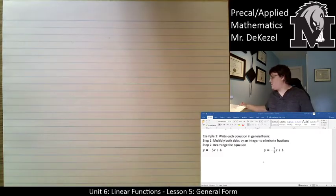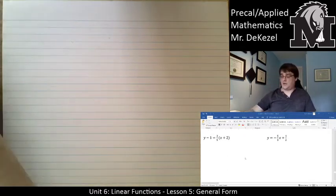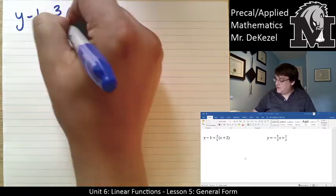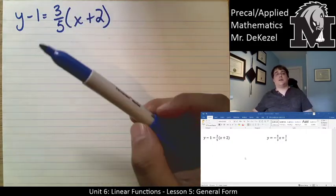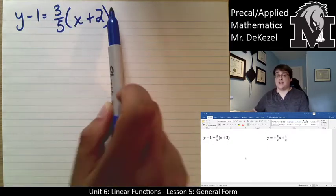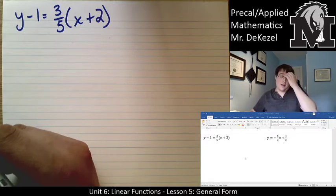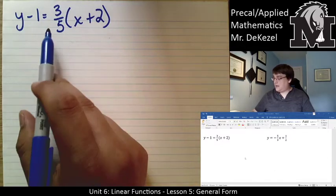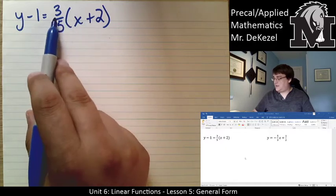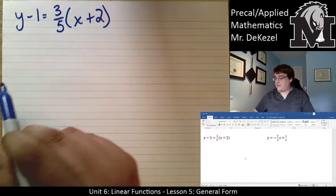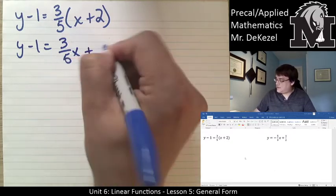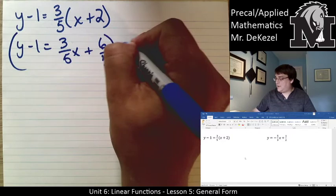Next example in slope-point form: y - 1 = 3/5(x + 2). This is trickier because we need to distribute the fraction through the brackets first. Multiplying through: 3/5 times x is 3x/5, and 3/5 times 2 is 6/5. So we get y - 1 = 3/5x + 6/5.